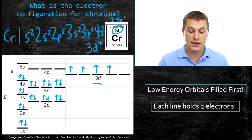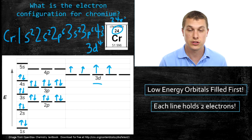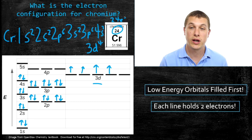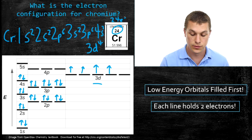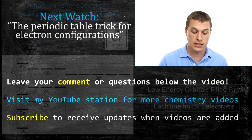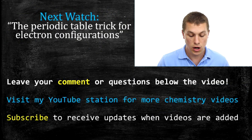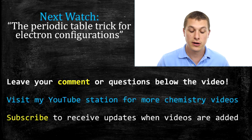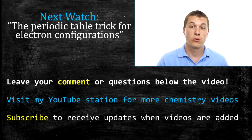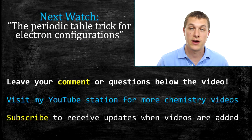As the elements get higher in terms of the number of electrons, we don't just want to fill in these sorts of diagrams — we want to use the periodic table, which is a much quicker way to write electron configurations. Now that you have a basic idea of what electron configurations are, go ahead and watch my next video, The Periodic Table Trick for Electron Configurations, and there we'll learn how to write these things much faster.